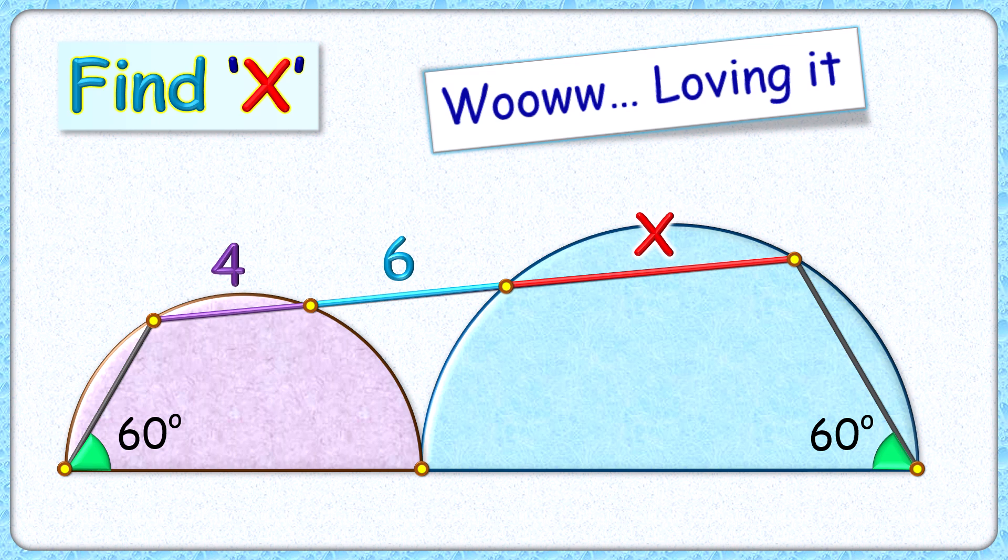Wow! You will love the solution. Here in this question, given are two semicircles whose diameters are in a straight line. A line segment is cutting across these two semicircles, cutting it into lengths of 4, 6, and x cm each. Here these angles are given as 60 degrees. The exciting part is with this limited data we have to find the length of this red chord or value of x.